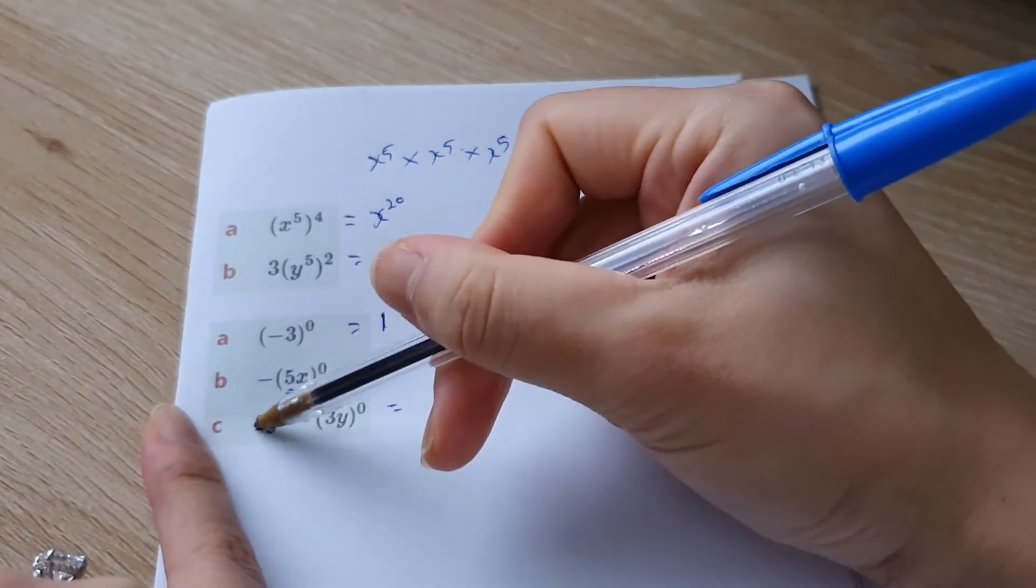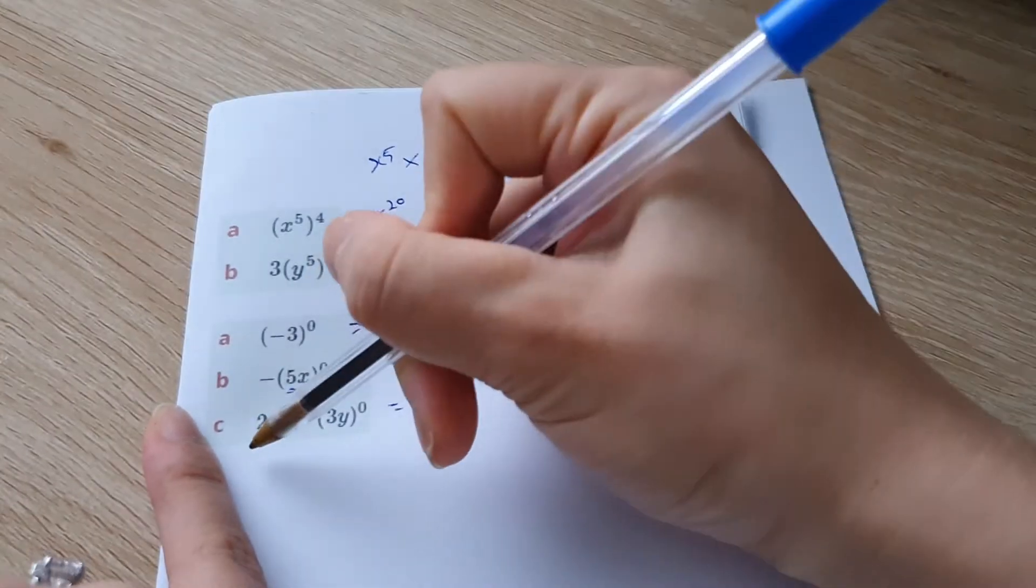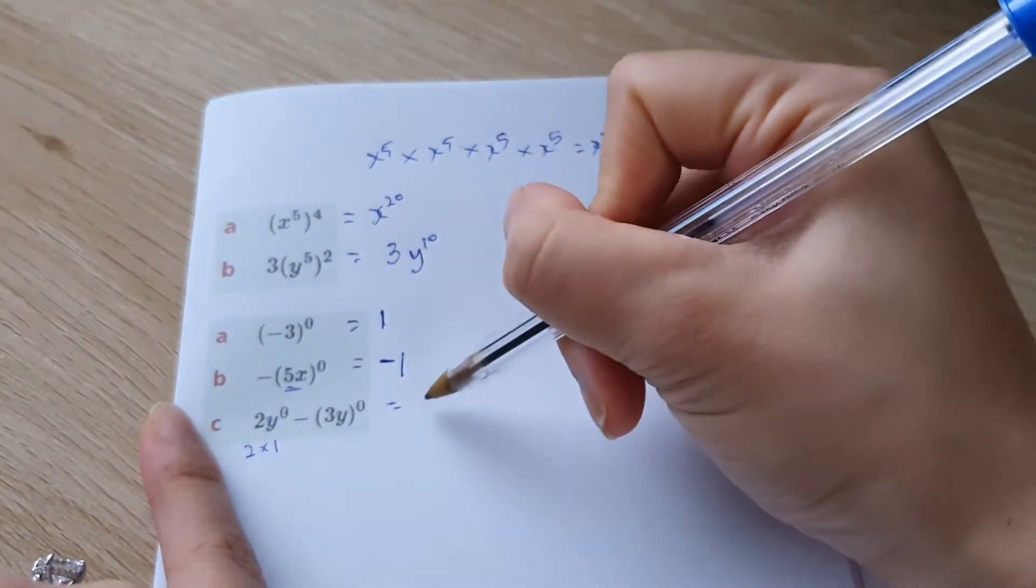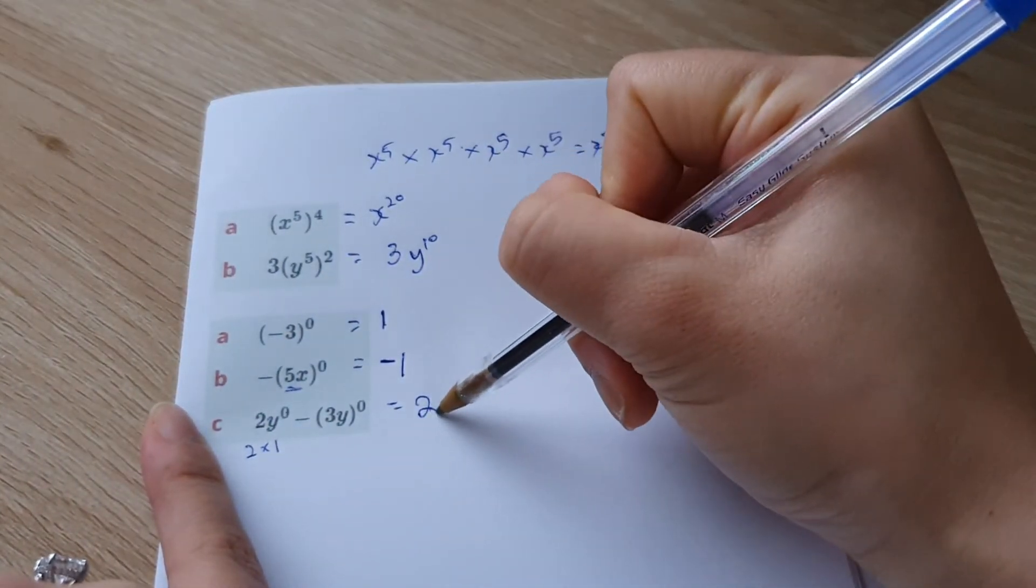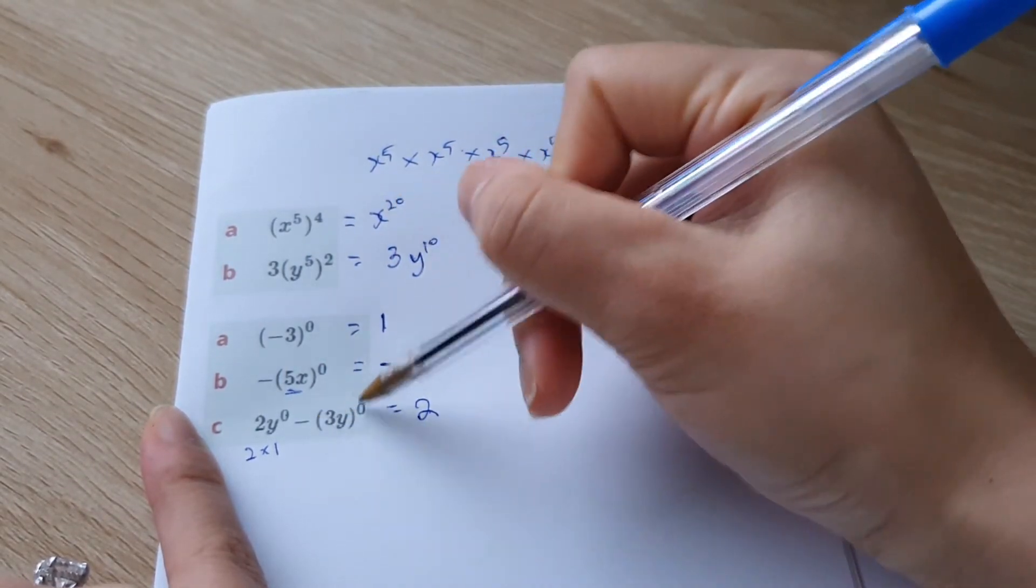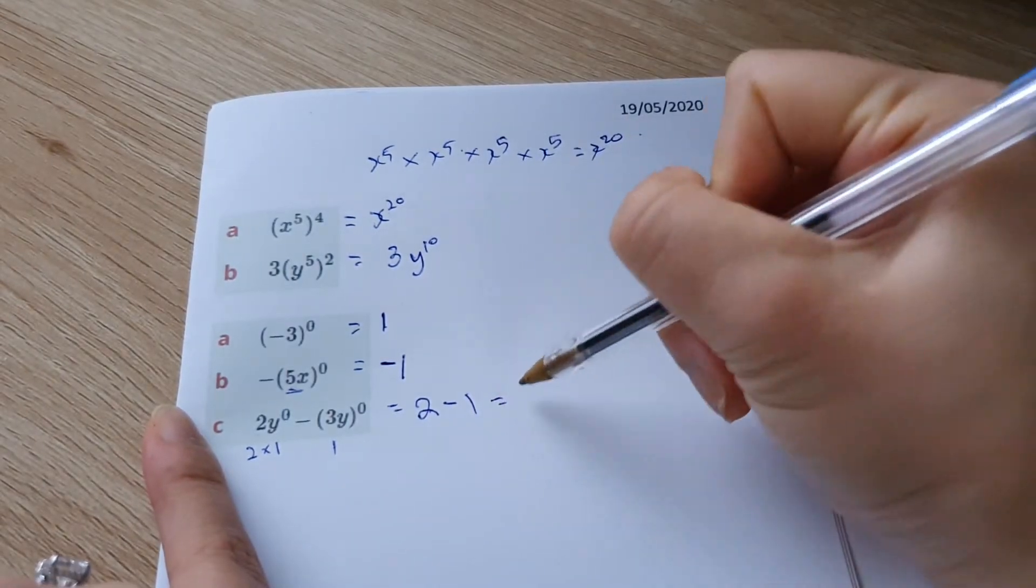Now, over here, we've got 2y to the power of zero. Now, two times y to the power of zero is the same as saying two times one. Just like I explained before. So this actually gives us the number two. The second part, 3y all to the power of zero is going to be one. So two take one and our answer is one.